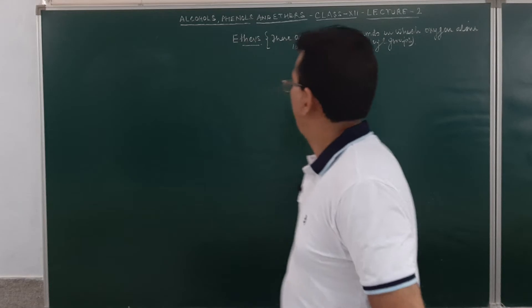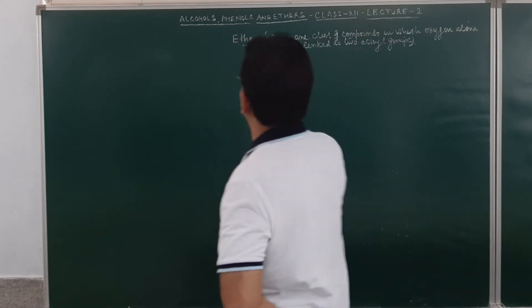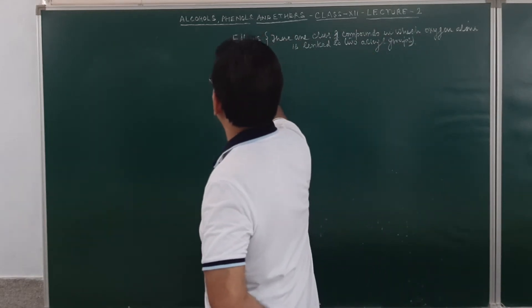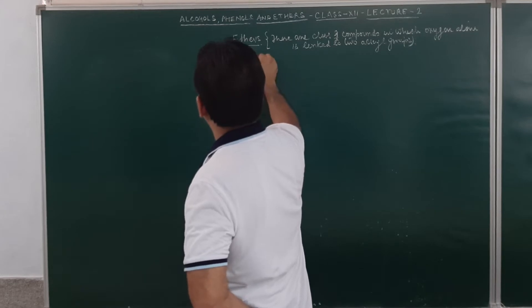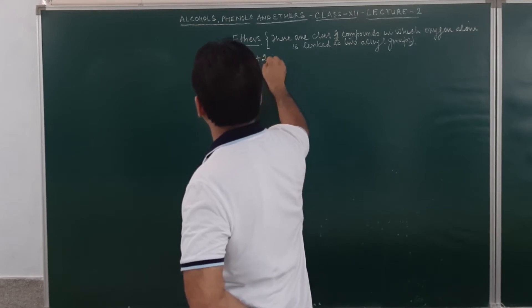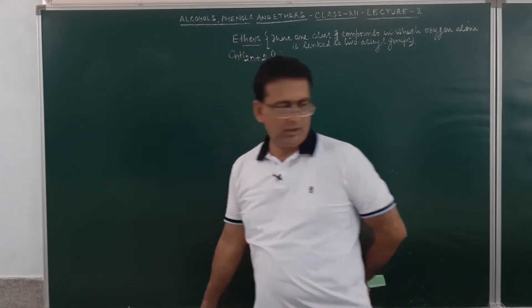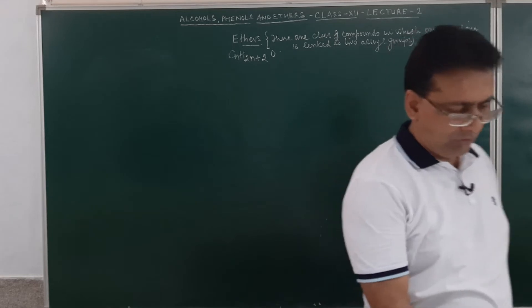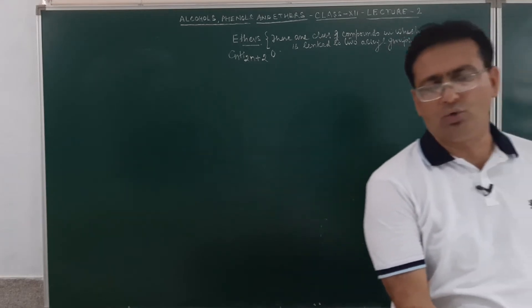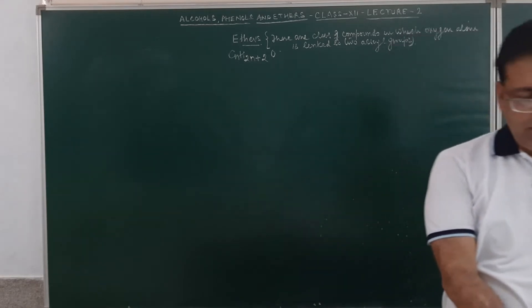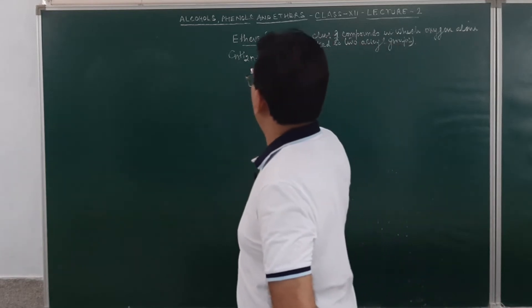If someone asks you what will be the general formula for ether, the general formula for ether is CnH2n+2O.